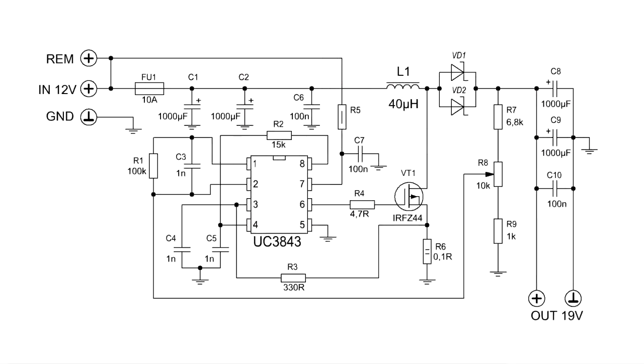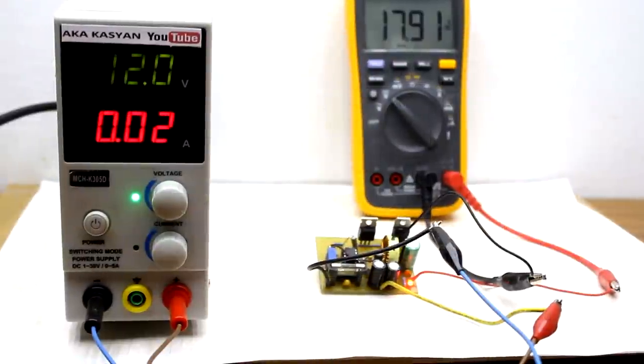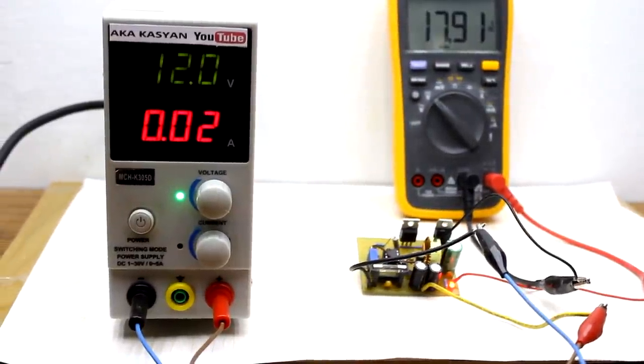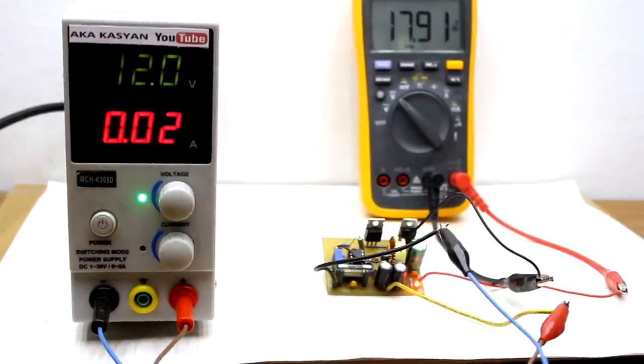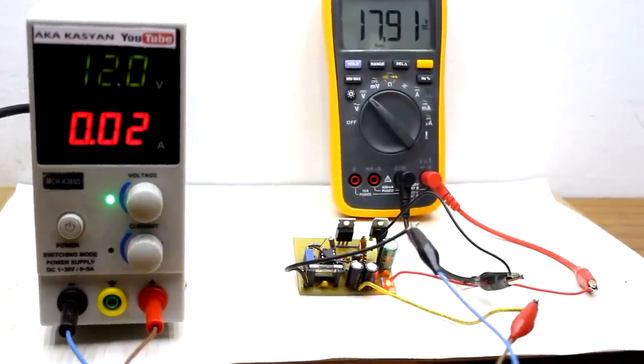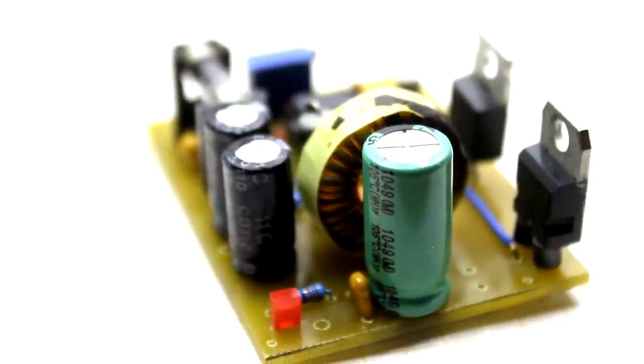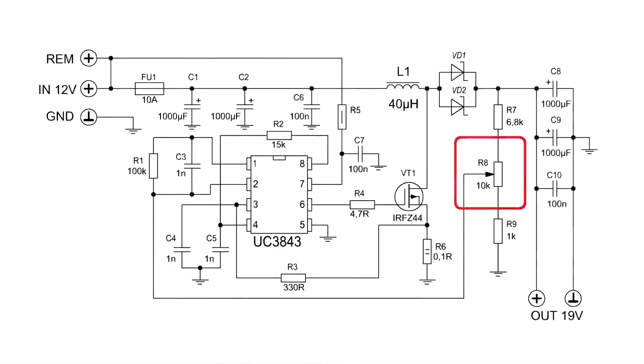The basis of the circuit is the most popular PWM controller from the family UC38. In this case it is UC3843. For example, at the input of the circuit we apply 12 volts and at the output we get 19 which are necessary for charging almost any laptop. In general, the range of input and output voltages is quite wide. By rotating the trimmer it is easy to get other output voltages.